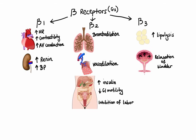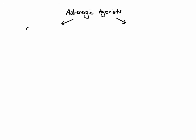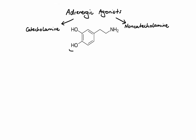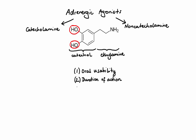Now let's switch gears and talk about actual adrenergic agonists. Adrenergic agonists fall into two major chemical classes: catecholamines and non-catecholamines. A catecholamine is an organic compound that has a catechol — basically a benzene ring with two hydroxyl side groups — an intermediate ethyl chain, and a terminal amine group. Non-catecholamines have a similar backbone structure, but without those two hydroxyl groups on adjacent carbons on the benzene ring. These structural differences create three main differences in properties: oral usability, duration of action, and CNS penetration.